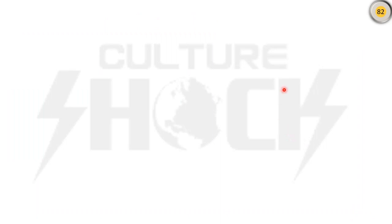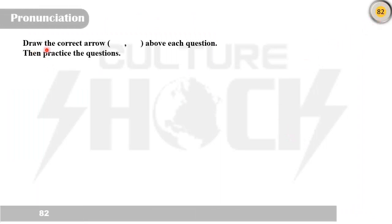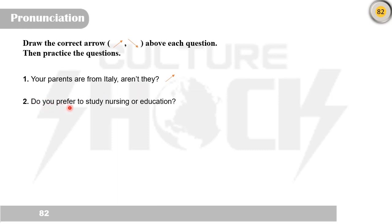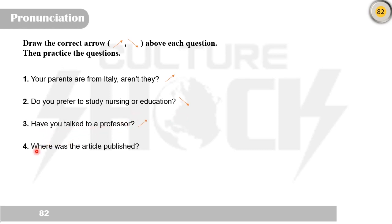Let's move to the workbook, page 82. Draw the correct arrow — rising or falling — above each question, then practice the questions. Number one: your parents are from Italy, aren't they? Number two: do you prefer to study nursing or education? Number three: have you talked to a professor? Number four: where was the article published? Number five: would you rather have tea, coffee or cappuccino?